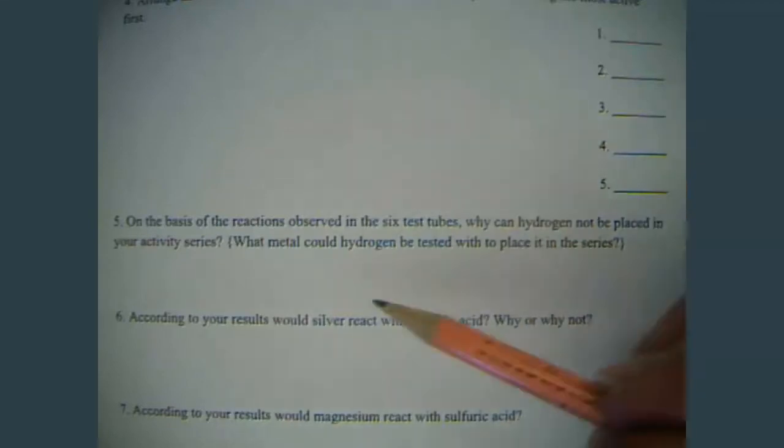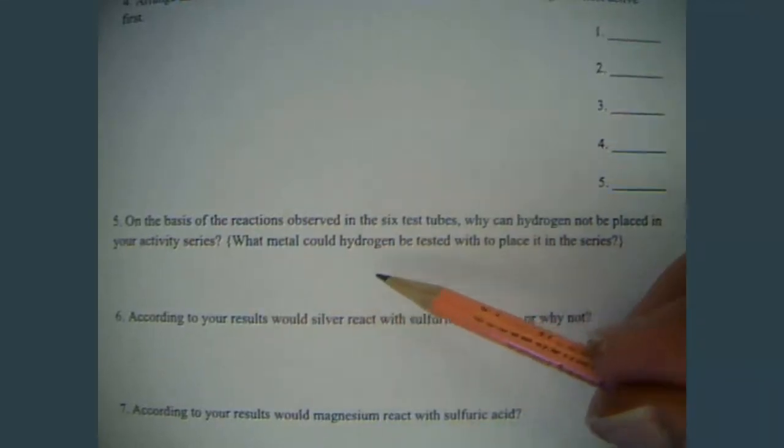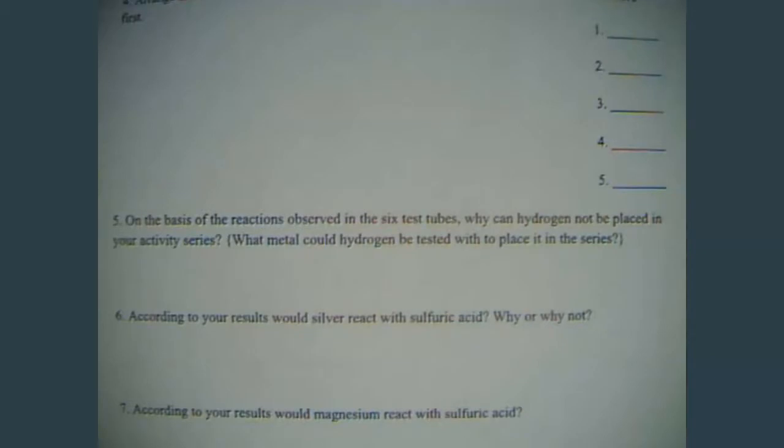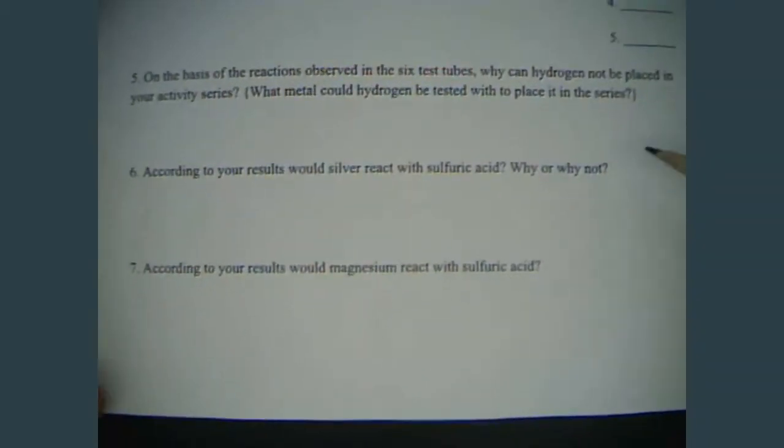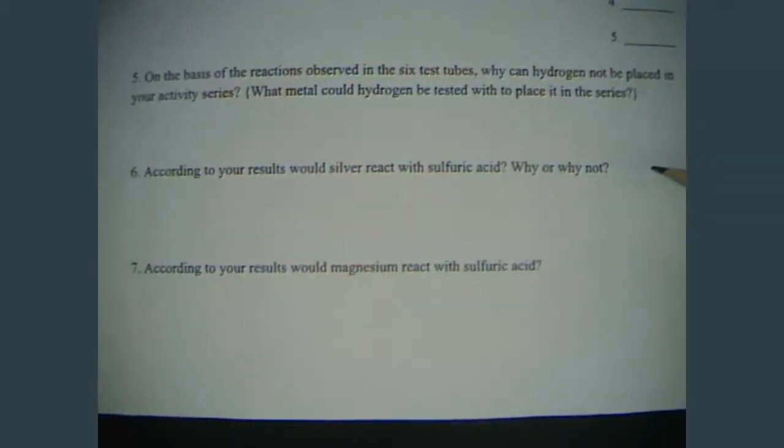And you have to test hydrogen with one of these metals in order to figure out where it goes. And what I'm asking is, what metal would you need to test it with in order to fit it in that activity series? And then, two questions that you've got to think about, so inquiry questions. According to results, would silver react with sulfuric acid? Why or why not?